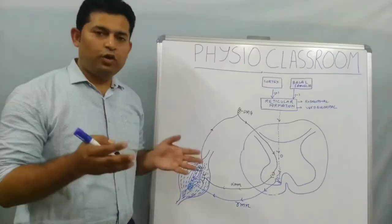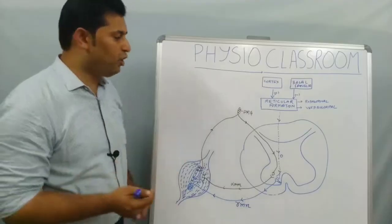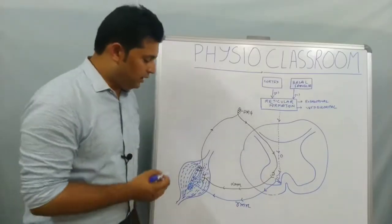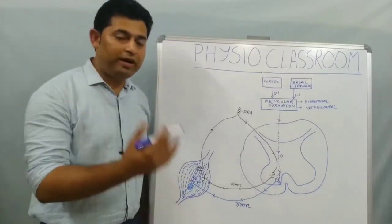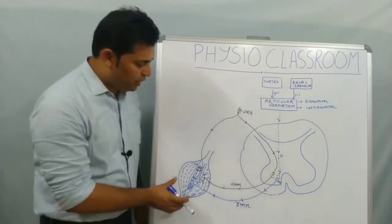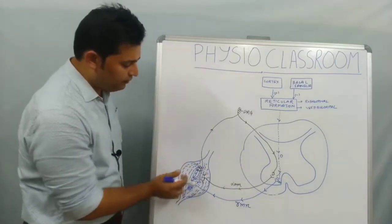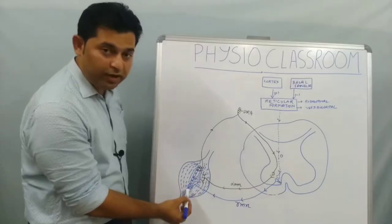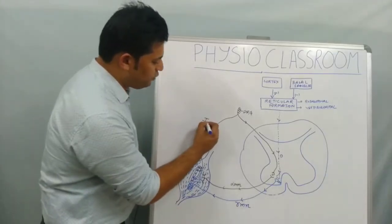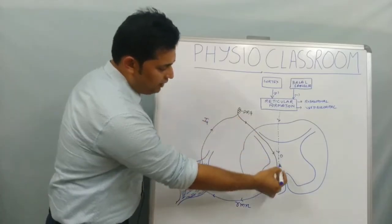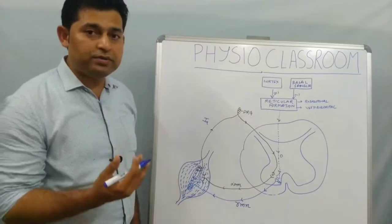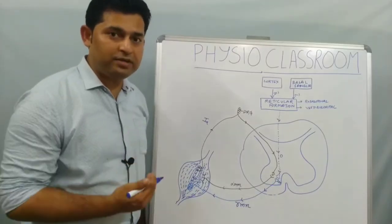In the previous video we covered the muscle stretch reflex arc. Here we have the extrafusal fibers, the intrafusal fibers, the 1a sensory fiber going to the spinal cord, and the alpha motor neuron. Now I am going to introduce one more component into the picture, which is called the gamma motor neuron.